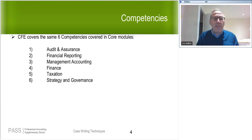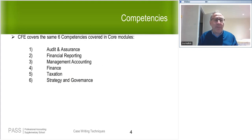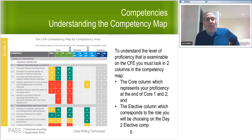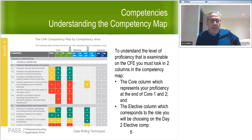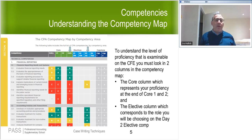There are six competencies you can be tested on in the CFE — the same competencies that came up in the modules for those who did PEP, and the same ones you would have been tested on in challenge exams, diploma, or master's programs. One of the most important sources to determine the level of depth for studying a given area is the competency map — specifically the CPA competency map and the more detailed CPA competency map knowledge supplement.